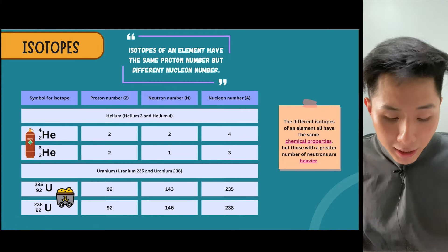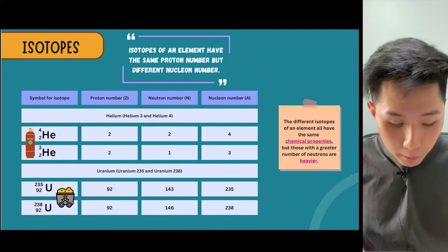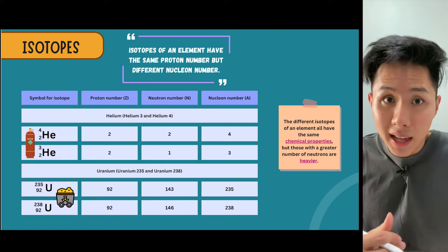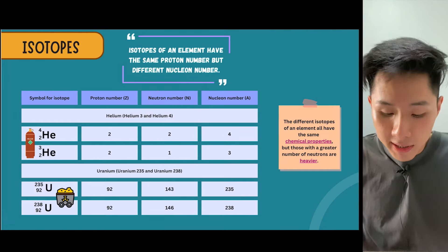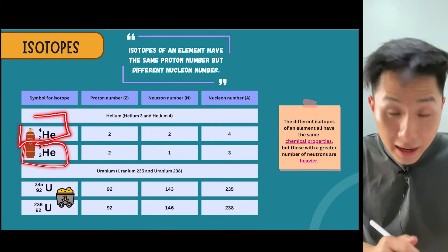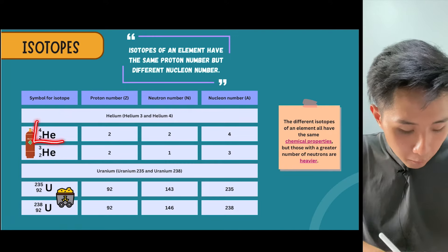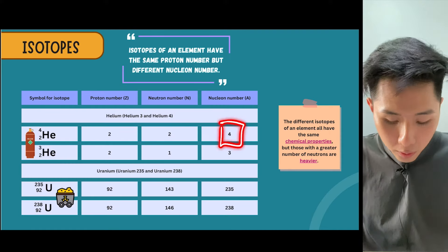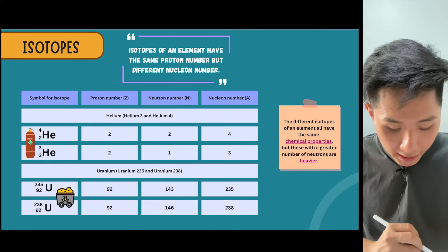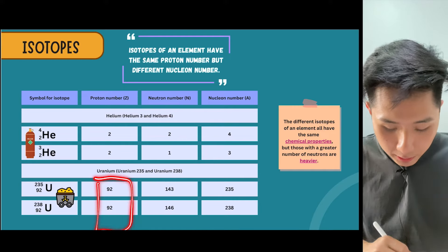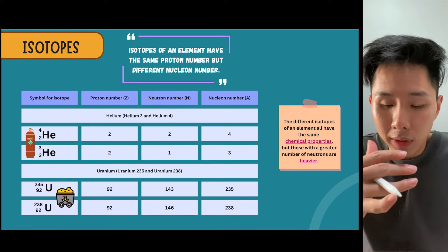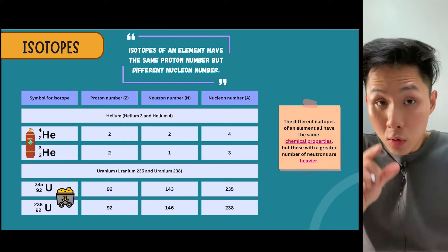When we talk about elements, some elements have something called isotopes. Isotopes means these elements have the same number of protons, making them the same element, but sometimes different neutron numbers, meaning they are heavier in terms of their nucleus. For instance, helium-4 and helium-3 have the same number of protons, but helium-4 has more neutrons. These isotopes have the same chemical properties because they have the same number of protons, but those with greater number of neutrons are heavier.